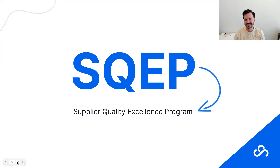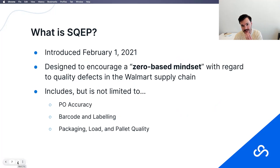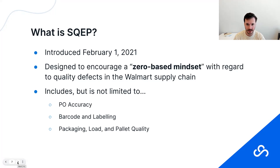Today we're talking about the Supplier Quality Excellence Program — SQEP. You can think of it as the third major installment in the Walmart revenue loss world: after regular AP deductions, there are two compliance programs — OTIF and SQEP. SQEP is the most recent of the three. This webinar is designed to cover basically all of the existing phases of SQEP — everything currently in effect — covering the basics while also getting a bit deeper into each phase.